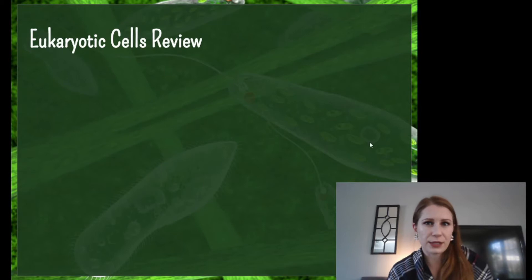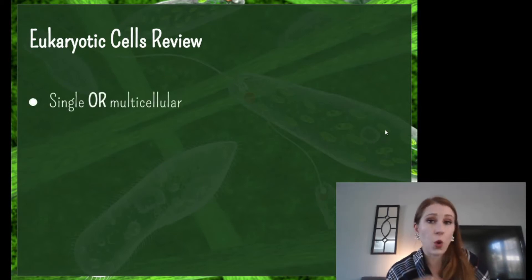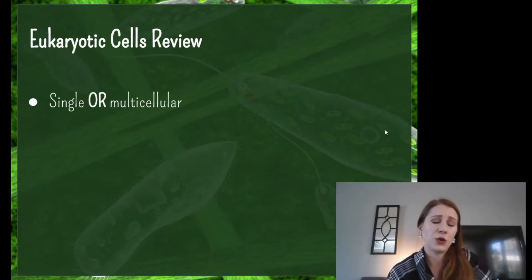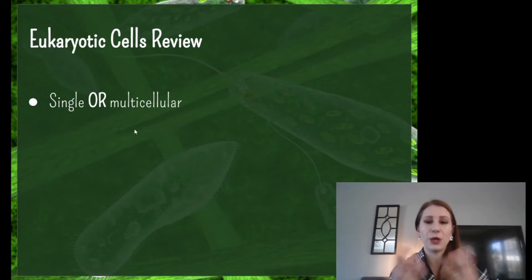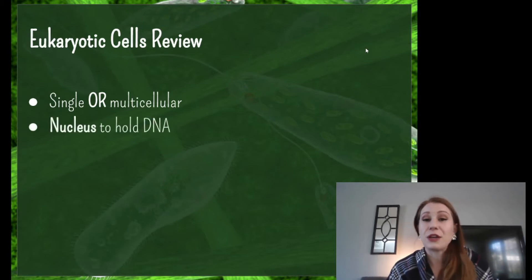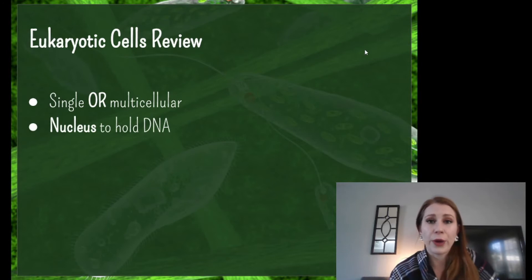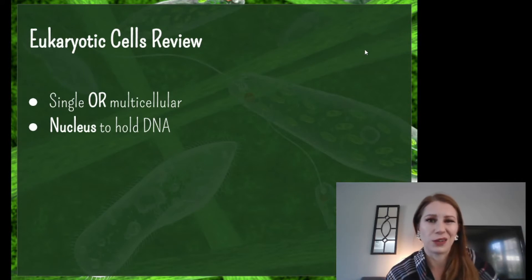So first we need to review eukaryotic cells so that we can understand what all of these have in common. They can be single or multicellular — prokaryotic cells could only be single-celled, but eukaryotic cells can be single-celled or multicelled. We have the ability to build our cells together to create complex systems, which helps us create all of our complexity. It has a nucleus to hold our DNA. This is the biggest thing that separates a eukaryote from a prokaryote — prokaryotes say no to a nucleus.